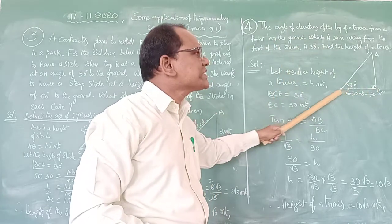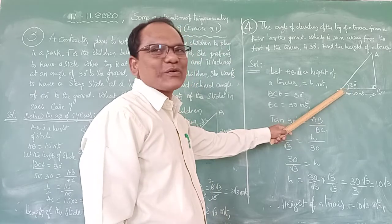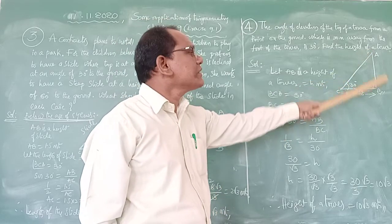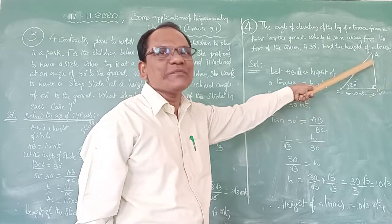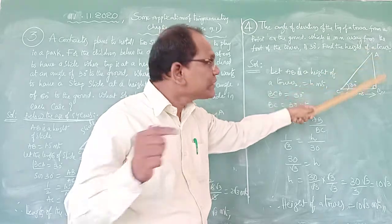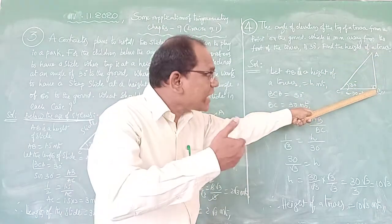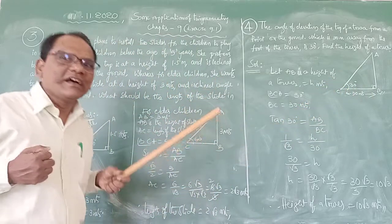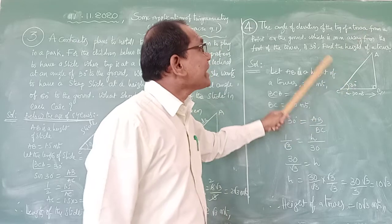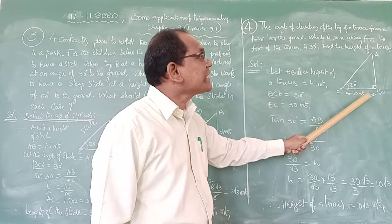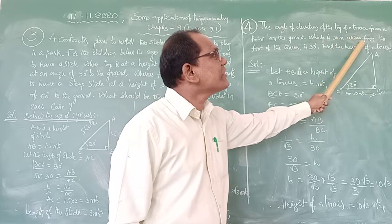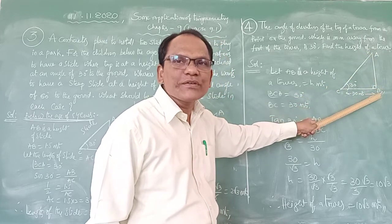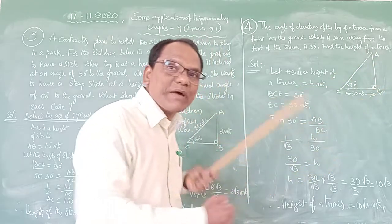Here, the observer is standing on the ground at point C. AB is the tower, where A is the top and B is the foot of the tower. The observer moves 30 meters away from the foot of the tower and watches the top. So BC equals 30 meters. The observer watches the top of the tower at an angle of elevation of 30 degrees.